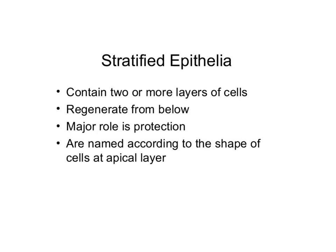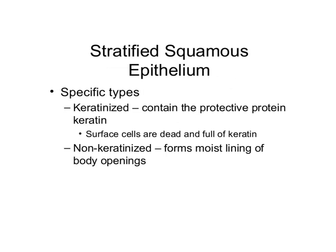We will discuss each type of epithelium one by one. The stratified squamous epithelium is of two types: keratinized or non-keratinized. If there is a layer of keratinization over the surface it is called stratified keratinized epithelium, which has a protective function. If it does not have a keratinized layer, we call it non-keratinized epithelium.